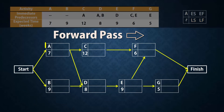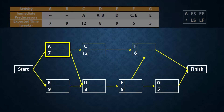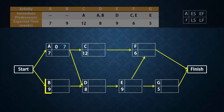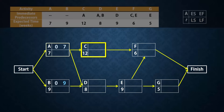Let's do the forward pass. A has no predecessor, so its earliest start time will be 0, or right away. Since it has 7 weeks to be completed, its earliest finish time will be 0 plus 7, which gives 7. B also has an earliest start time of 0, and with an activity time of 9, it will have an earliest finish time of 9. Now C needs A to be completed before it can start. Since the earliest finish time for A is 7, the earliest time C can start is 7. And with an activity time of 12 weeks, C will have an earliest finish time of 12 plus 7, which gives 19.